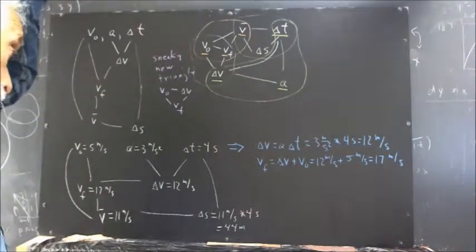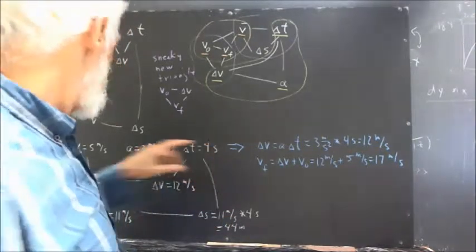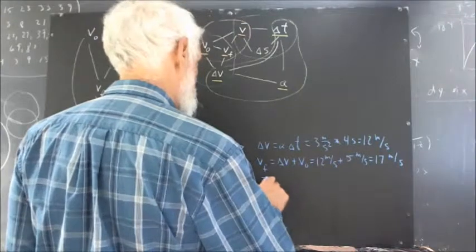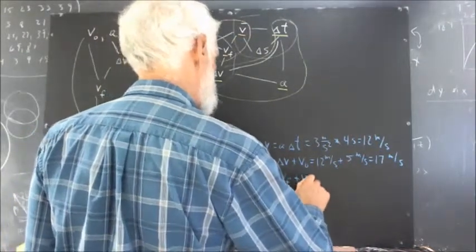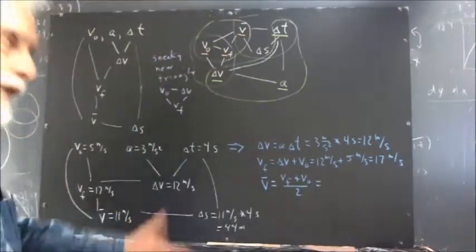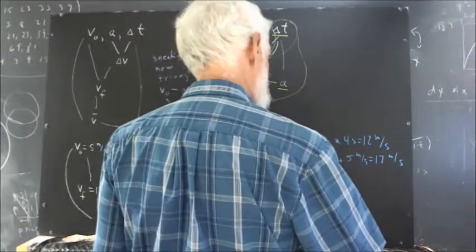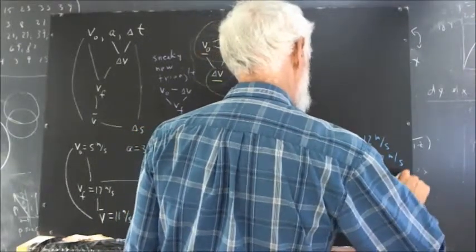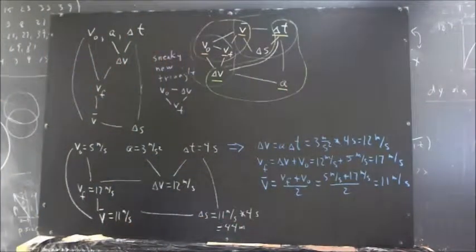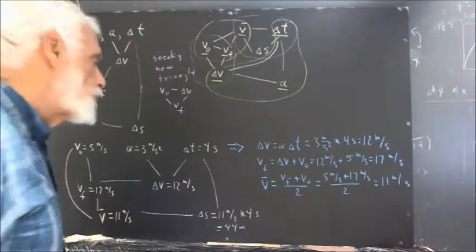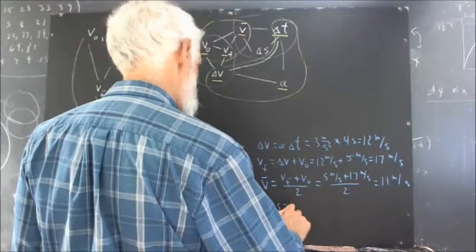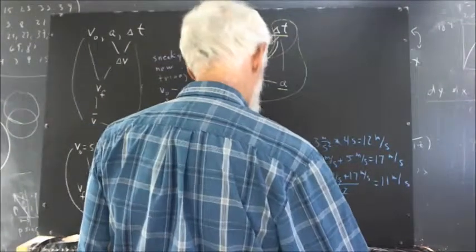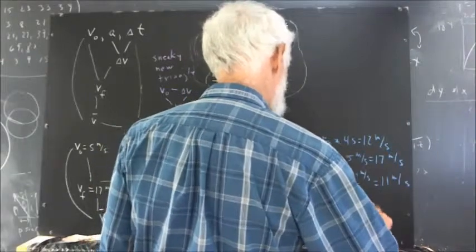Now, knowing V naught and VF, we put those together to get average velocity: V bar equals (5 meters per second plus 17 meters per second) over 2, which is 11 meters per second. Then delta S equals V bar times delta T, which is 11 meters per second multiplied by 4 seconds, giving 44 meters.